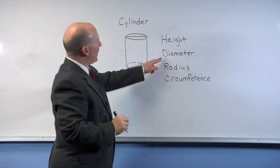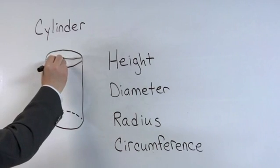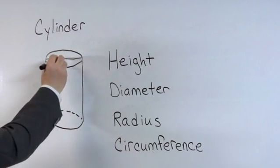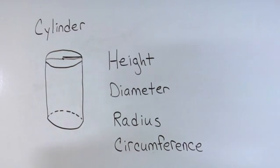Now comparing the diameter and the radius, if we stick a pin right down the middle of the can, this distance, which is half the diameter, is equal to the radius.